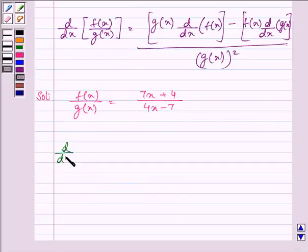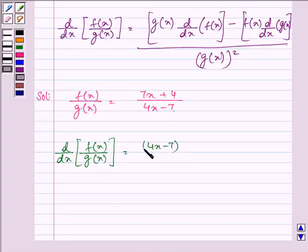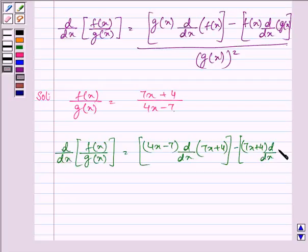So we have d by dx of fx over gx is equal to gx, that is 4x minus 7, times the derivative of 7x plus 4, minus 7x plus 4 times the derivative of gx, which is 4x minus 7.